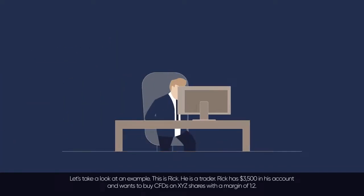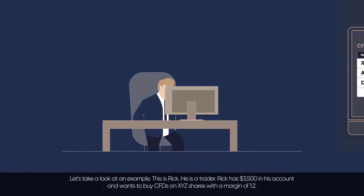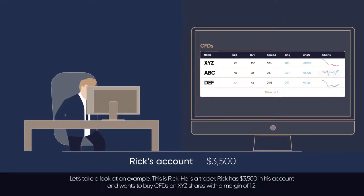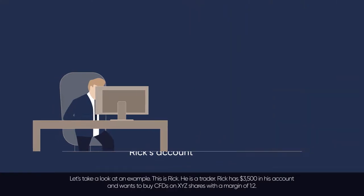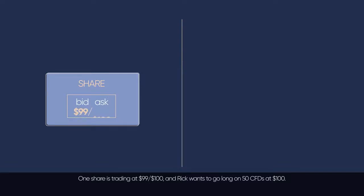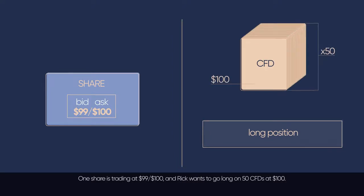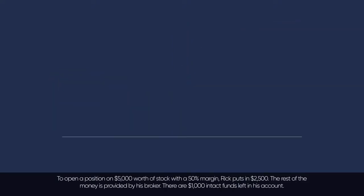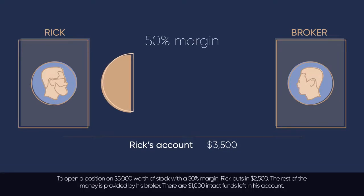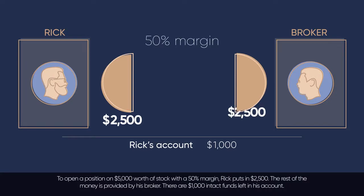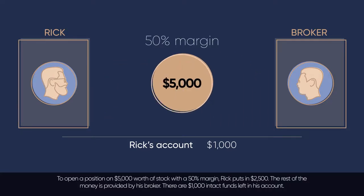Let's take a look at an example. This is Rick — he is a trader. Rick has $3,500 in his account and wants to buy CFDs on XYZ shares with a margin of 1 to 2. One share is trading at $99 / $100 and Rick wants to go long on 50 CFDs at $100 ask price. To open a position on $5,000 worth of stock with a 50% margin, Rick puts in $2,500. The rest of the money is provided by his broker, leaving $1,000 of intact funds in his account.